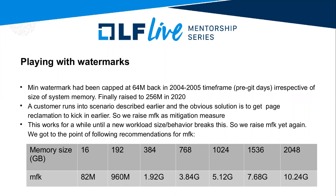The minimum watermark is capped by the kernel. If the computed value exceeds the cap, it's capped at that value. That cap was 64 megabytes for a very long time, set around 2003-2005 in a pre-git era. At the time it was probably fine, but now systems have much larger amounts of memory. The minimum watermark is starting to be fairly low for modern systems. In 2020 a patch raised that cap to 256 MB, which is much better — but it's still a fixed cap regardless of the memory size on the system.